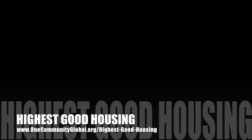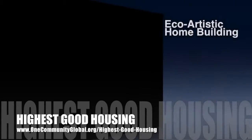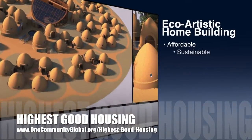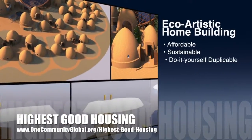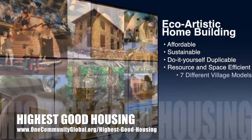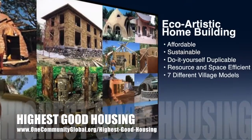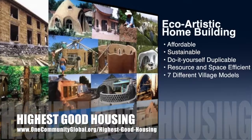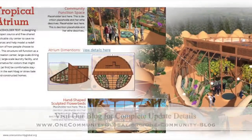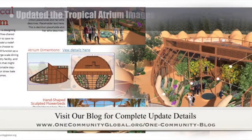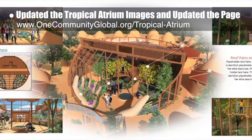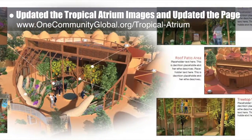One Community's approach to highest good housing is eco-artistic home building that is affordable, sustainable, do-it-yourself, duplicable, resource and space efficient, and consists of seven different sustainably constructed village models. This week the core team added people to the replacement tropical atrium images, added call-outs, and revised the tropical atrium page, shown here.